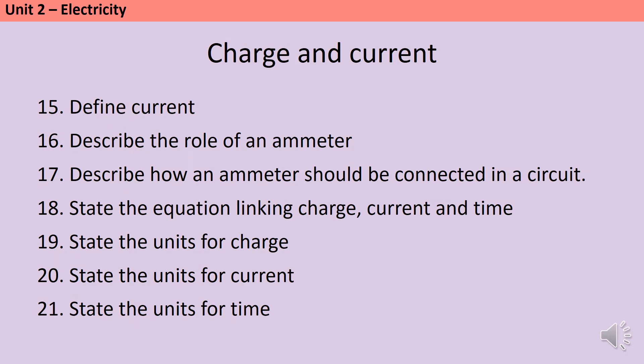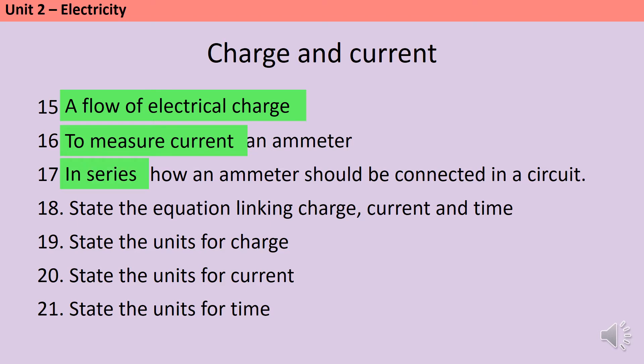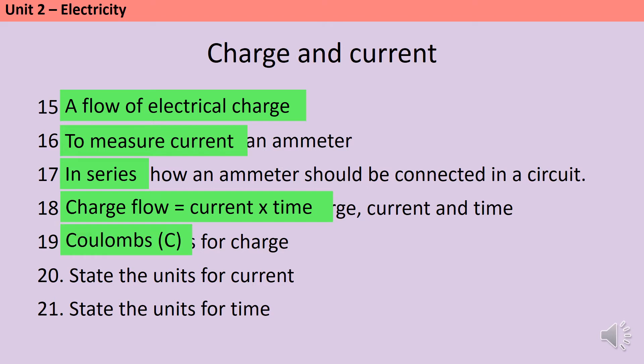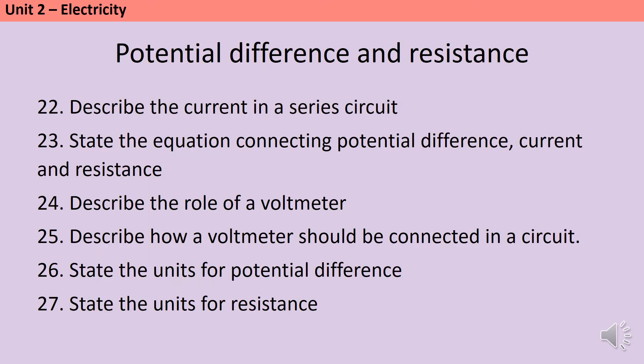Current can be defined as the flow of electrical charge and it's measured by an ammeter. An ammeter should always be connected in series. The equation linking charge, current, and time is charge flow equals current multiplied by time. Charge is measured in coulombs and current is measured in amperes, although we tend to call it amps. Either one is fine for your exams and the symbol is a capital A. Time for this equation should be measured in seconds. In a series circuit, the current is the same at all locations.